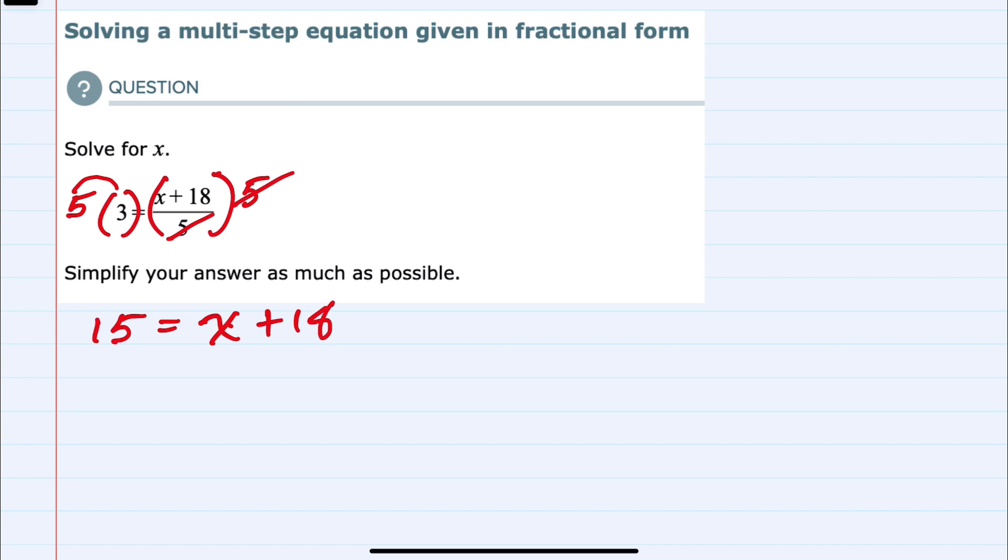Again, that was my motivation for multiplying by 5 - so that I could cancel that denominator. From here I can just solve by isolating the x. Subtracting the 18 over to the other side would cancel the 18 on the right hand side, leaving me with just x.